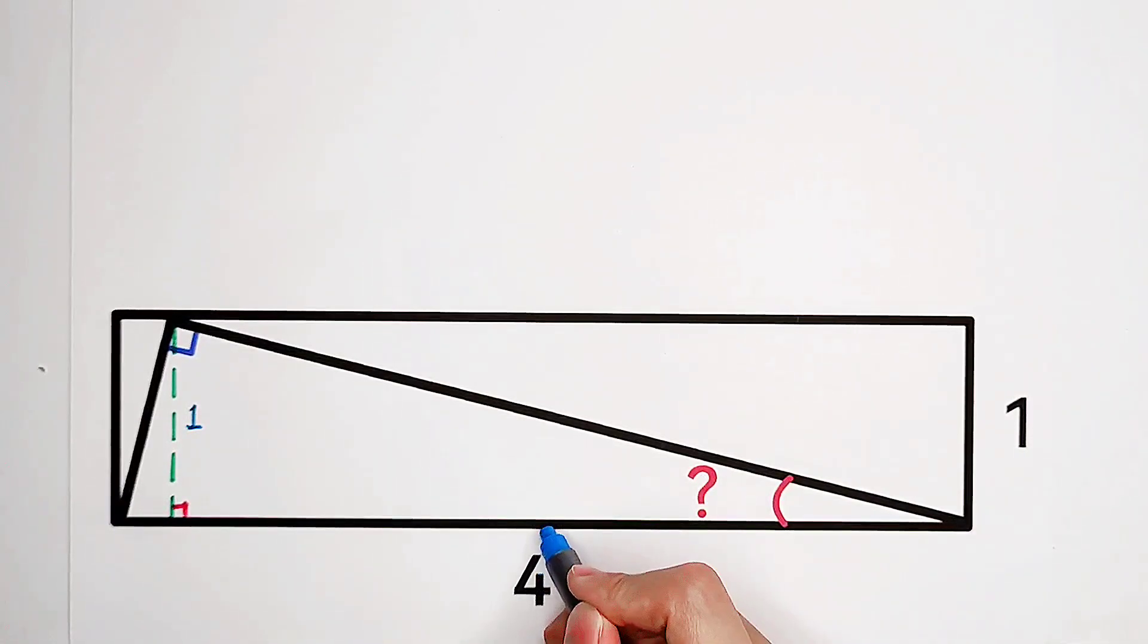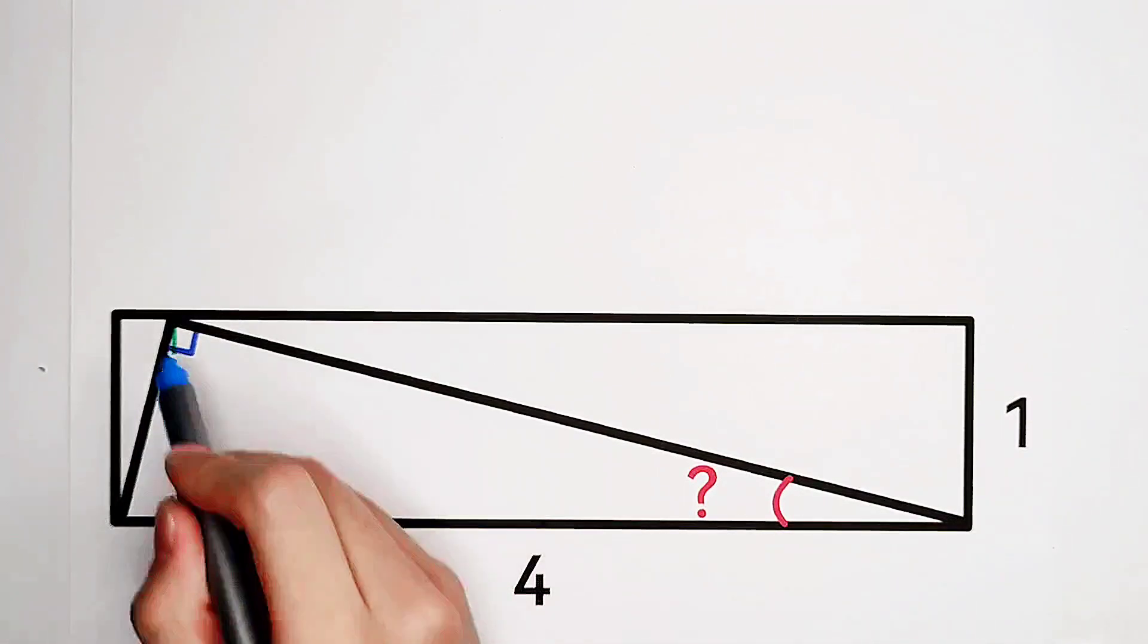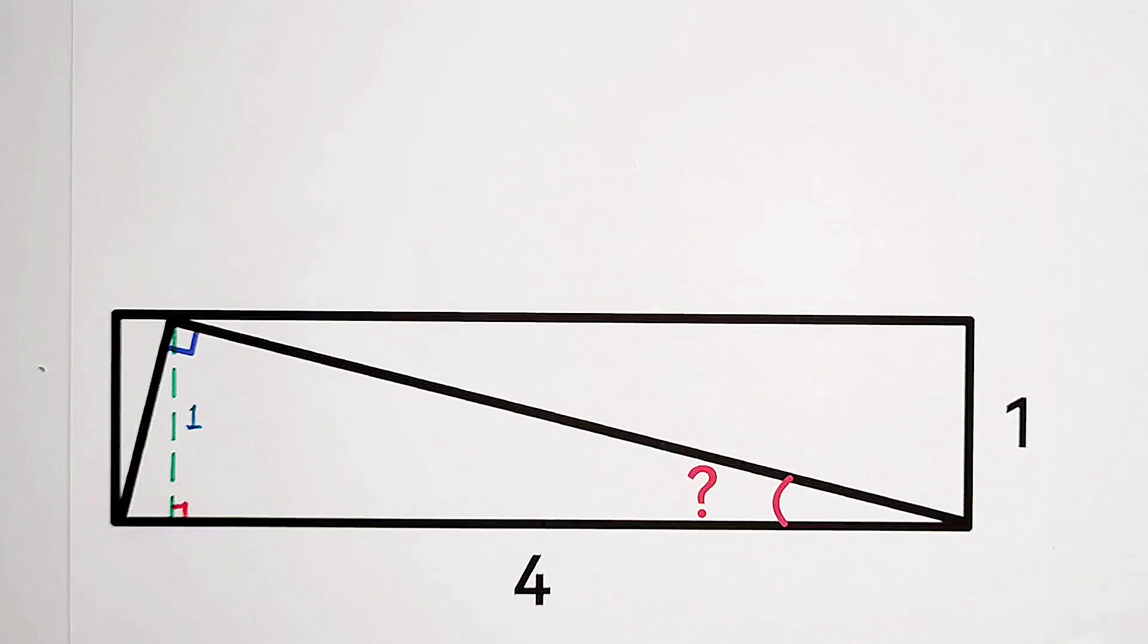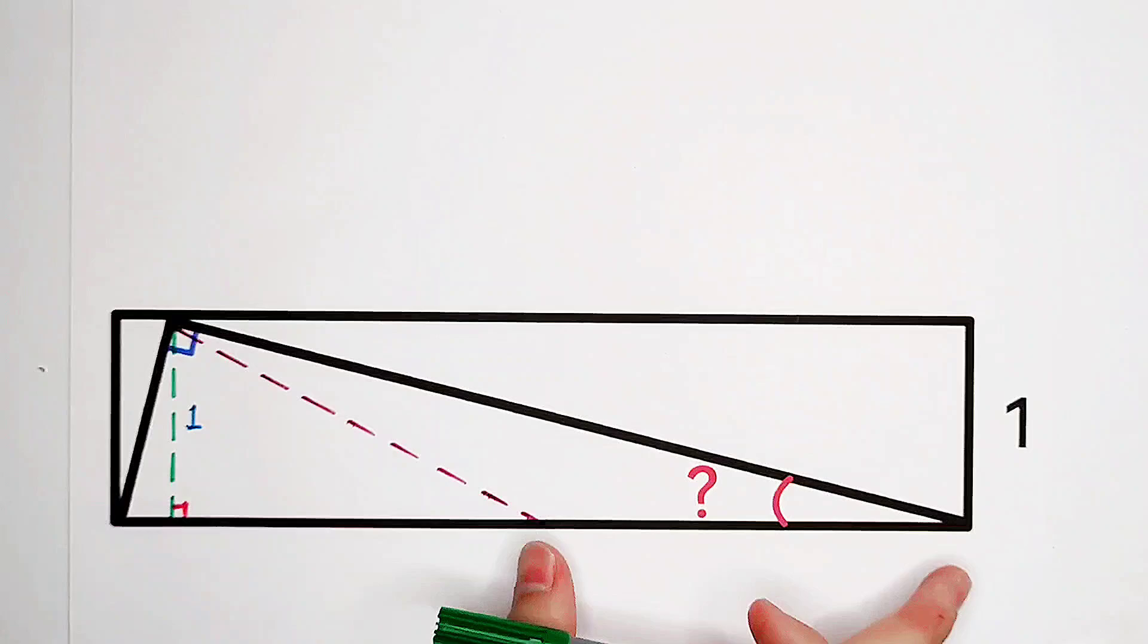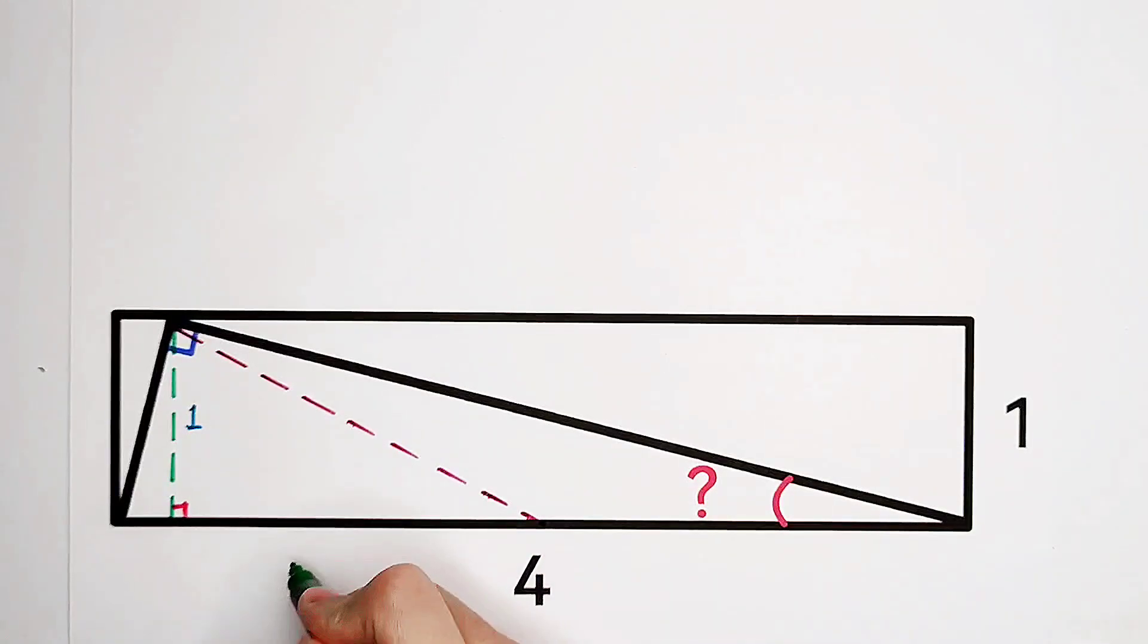Here is the midpoint of this line. Now, connect these two points. We know that this is the midpoint of this line segment. So that means these two pieces are equal. Because their sum is 4, so they are 2 and 2.